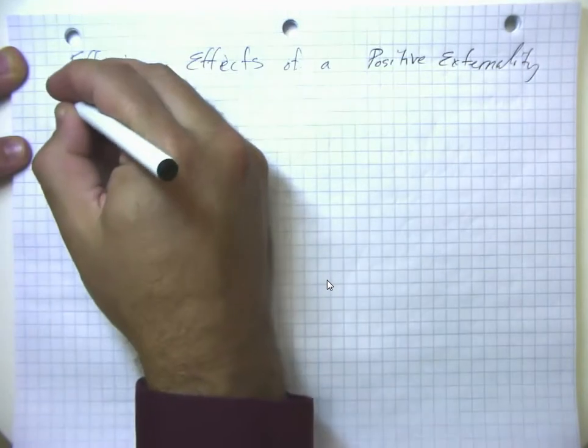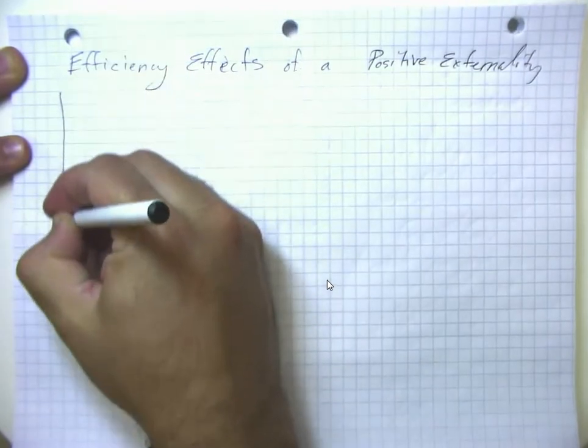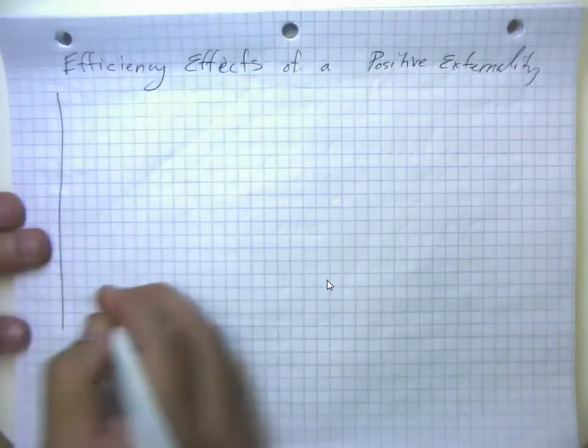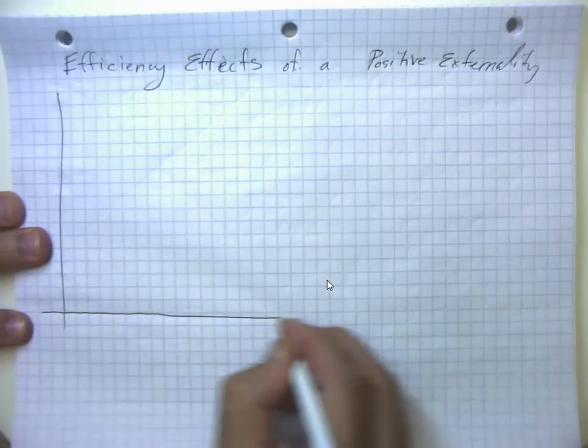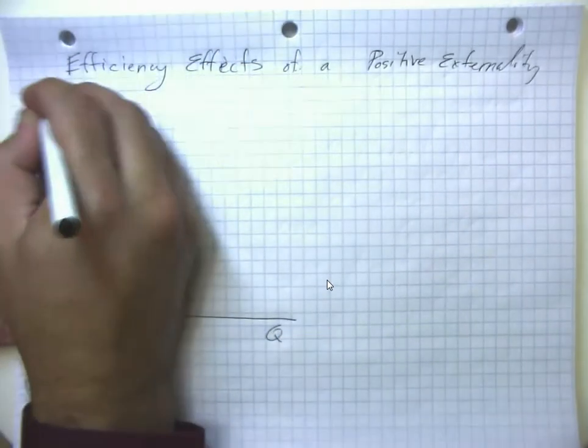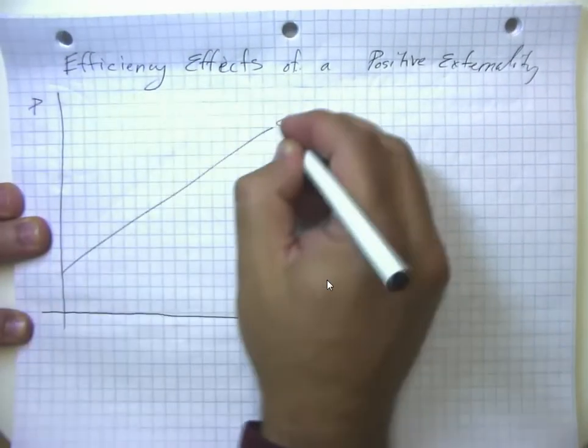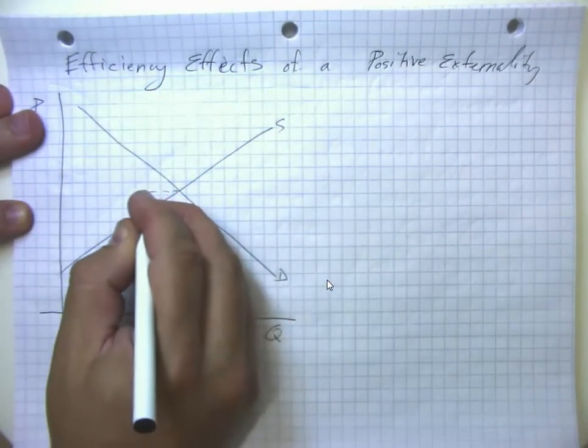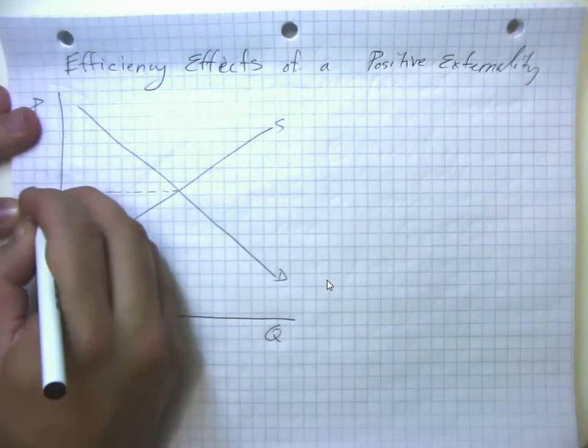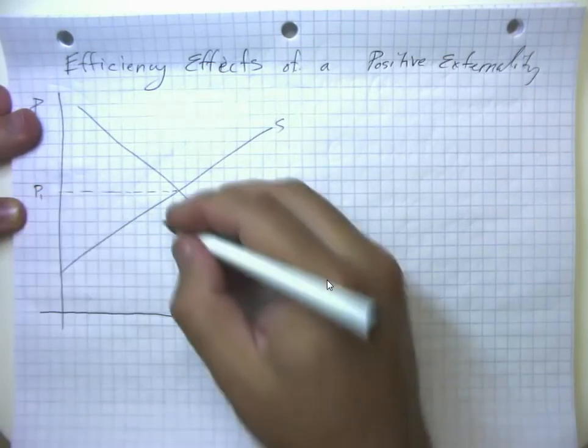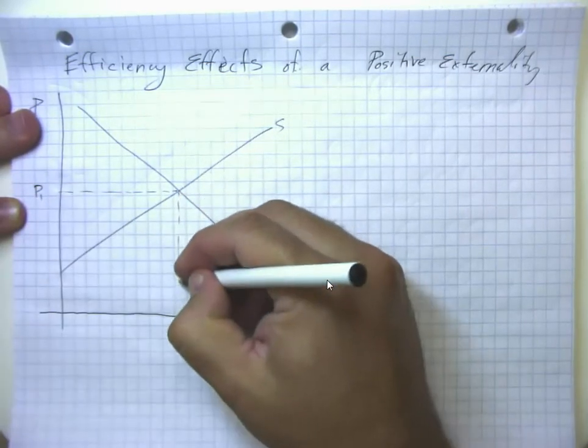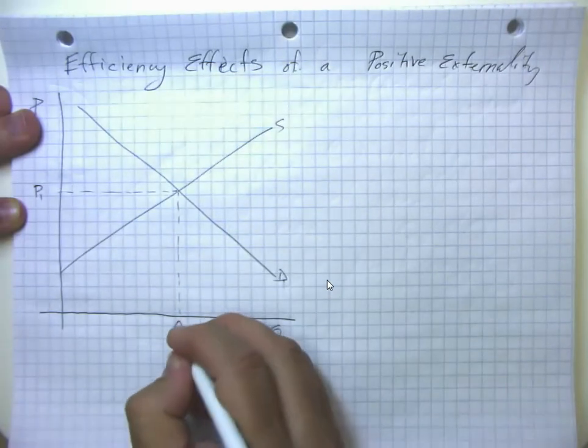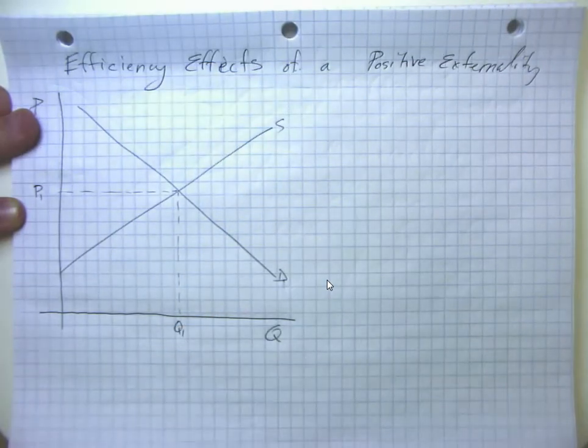We're going to think about what happens in our normal market equilibrium. We're going to have some supply curve and some demand curve, and we're going to have our unregulated market equilibrium price and quantity, Q1 and P1.